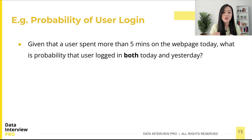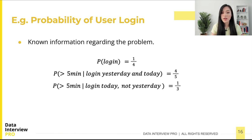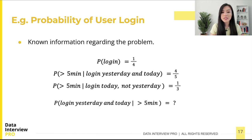This is clearly a conditional probability problem. Let's organize the information using conditional probability notation. The probability of daily login is 1/4. Given a user logged in both yesterday and today, the probability of spending more than five minutes on the webpage is 4/5. Given a user logged in today but not yesterday, that probability is 1/3. What we want to obtain is the probability that a user logged in both today and yesterday, given that they spent more than five minutes on the webpage.